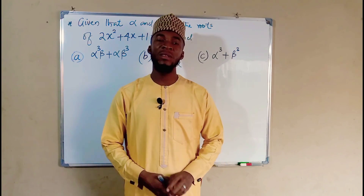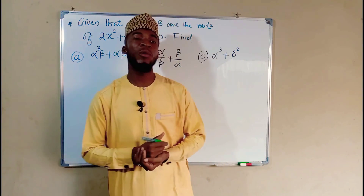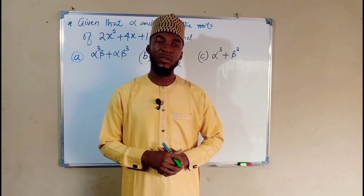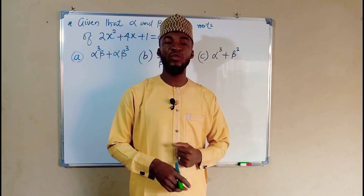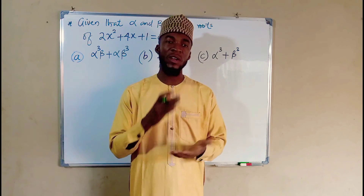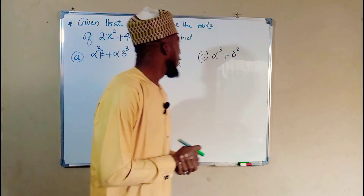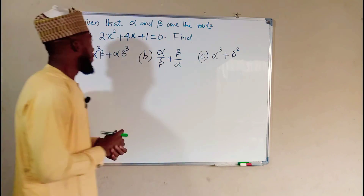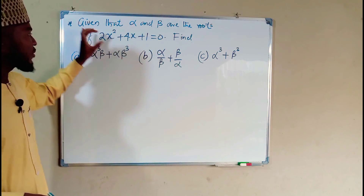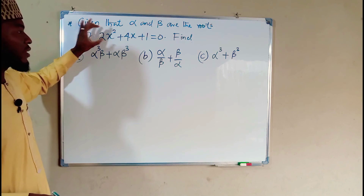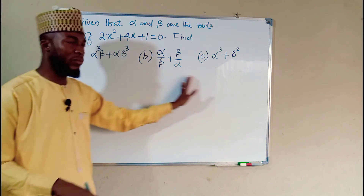Hello, good day everyone. Here is the continuation of our previous lesson on how to solve problems that are related to symmetrical functions of quadratic roots. Here we are given that alpha and beta are the quadratic roots of this quadratic equation and we are asked to simplify this.